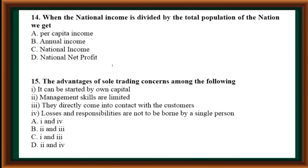When the national income is divided by the total population of the nation, we get: options are per capita income, annual income, national income, national net profit. Correct answer is Option A: per capita income.